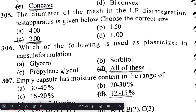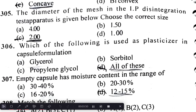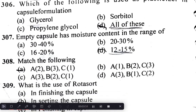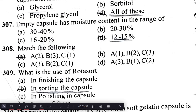The plasticizers used in capsule formulation are glycerol, sorbitol, and propylene glycol. Empty capsules have a moisture content in the range of 12–15%.